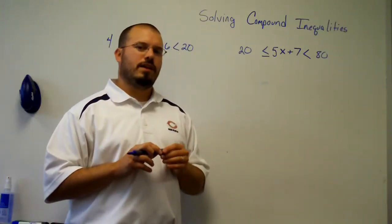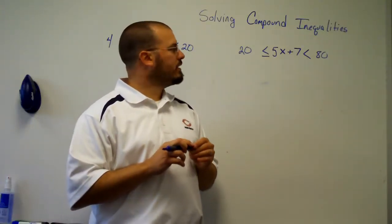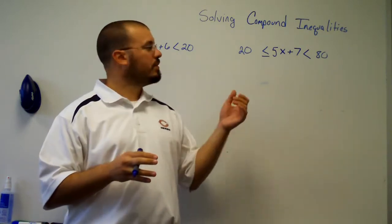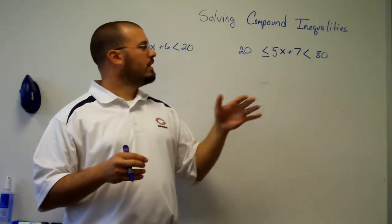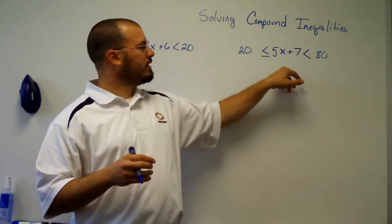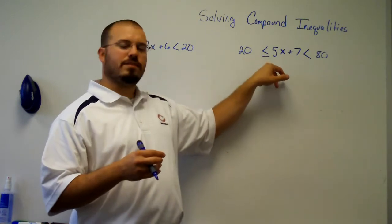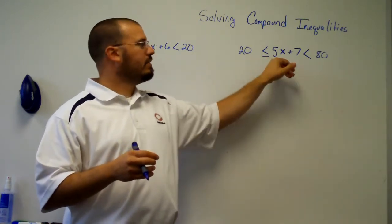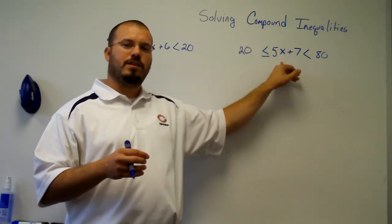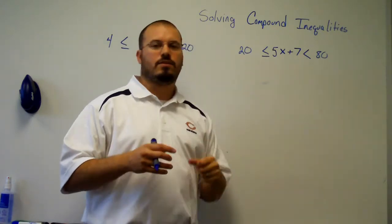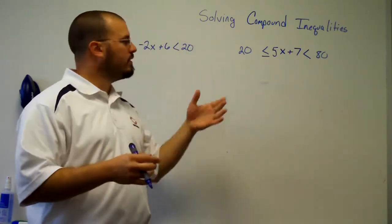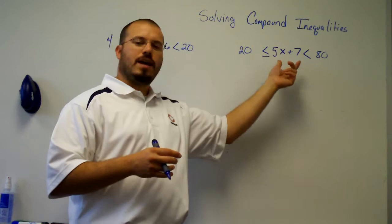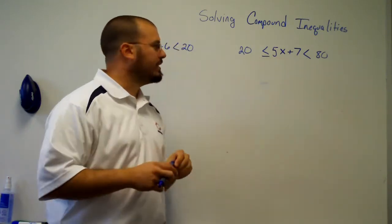In this video, we're going to look at solving compound inequalities. A compound inequality is when you're taking two inequalities and they've been written as a single inequality. For example, it would be 20 is less than or equal to 5x plus 7, and 5x plus 7 is less than 80. So those two inequalities have been combined as one, where they have something in common — they both involve 5x plus 7.